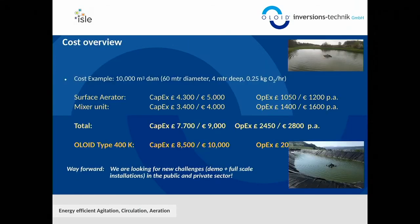I also have a cost overview comparing options for pond treatment plants. Normally running a surface aerator and a mixer together has a total investment cost of around 9,000 euros or 7,700 pounds, with operating costs for energy and maintenance of around 2,450 euros per year. Our investment price is slightly higher due to our small production scale, but the machines typically achieve return on investment in 3 to 4 years, which is quite good for wastewater treatment plants.